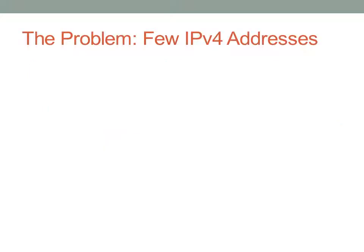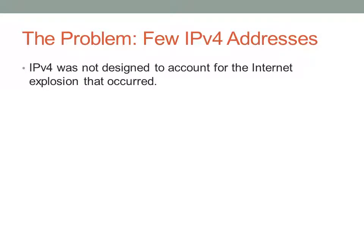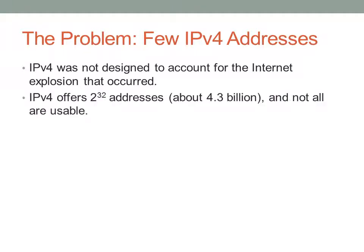The problem we have is there are very few IPv4 addresses compared to the number of internet devices in the world. IPv4 wasn't designed to account for the explosion that occurred when the internet finally took off. IPv4 offers about 4.3 billion addresses, and not all of these are usable — some are reserved for multicast and other special purposes. So by the time you get done, there aren't a whole lot of addresses available in comparison to the population of the world.